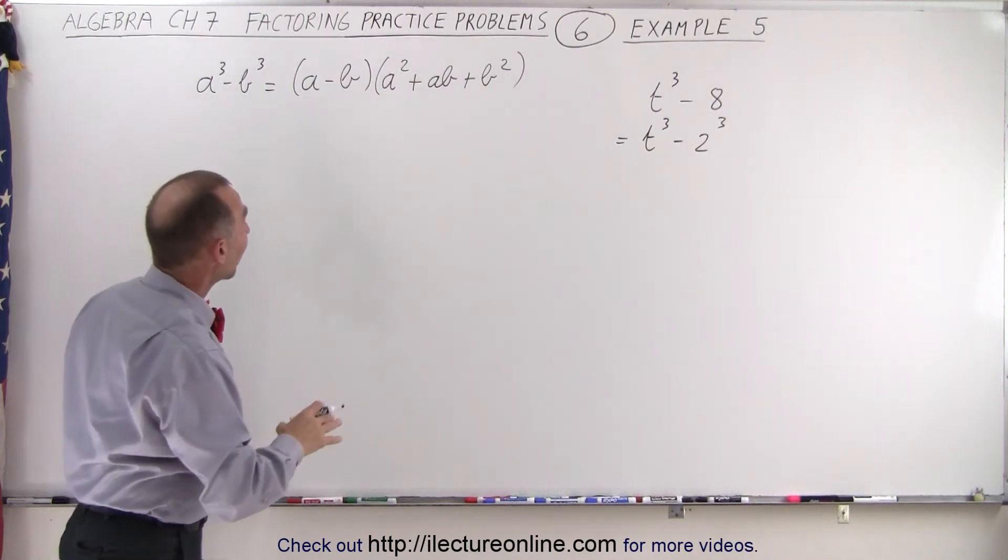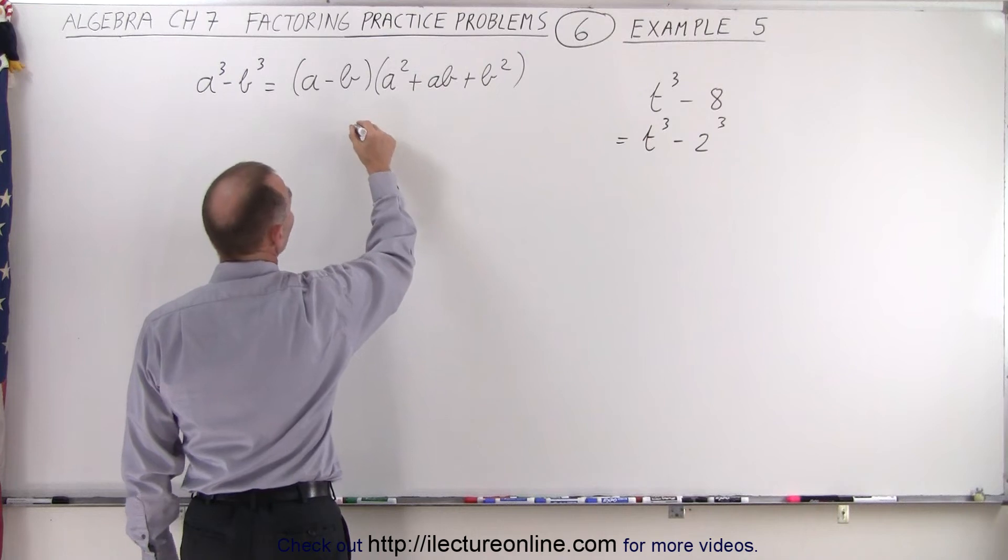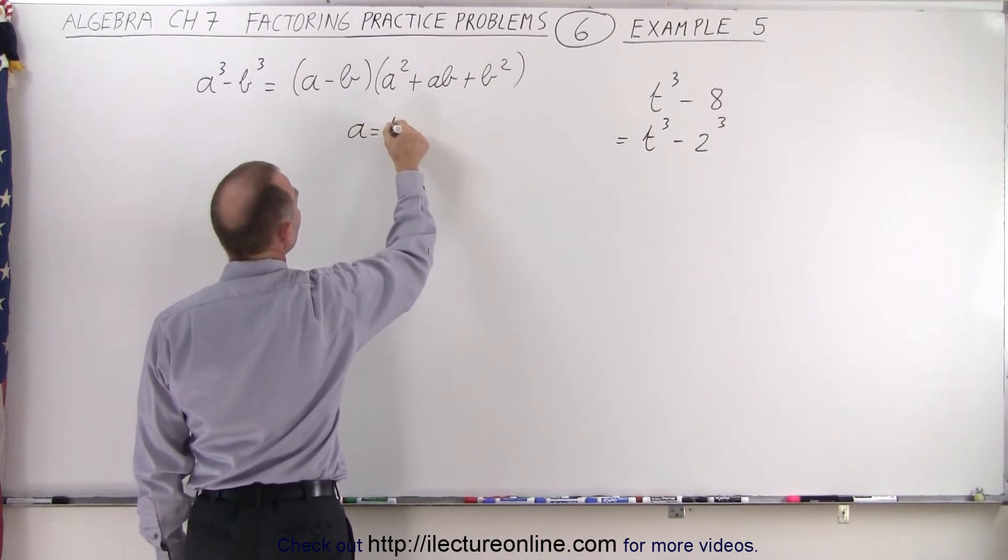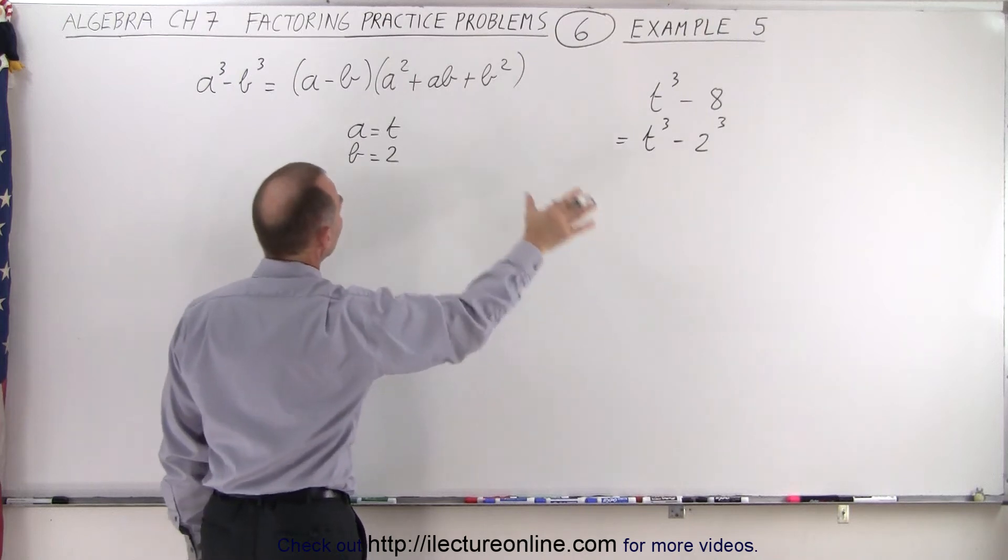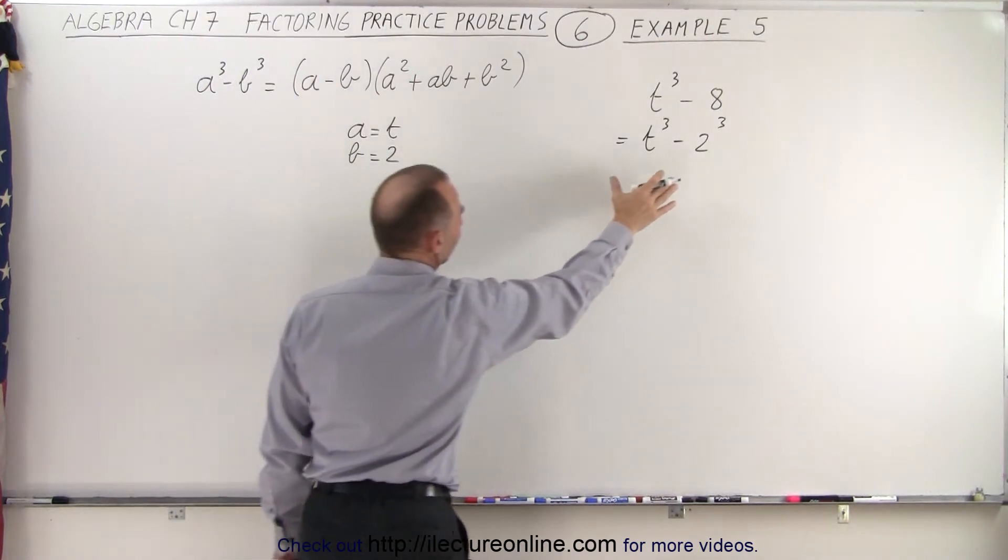All right, once we have that, then you realize that in this case a is equal to t and b is equal to the number 2. And then we plug that into this formula to factor this.